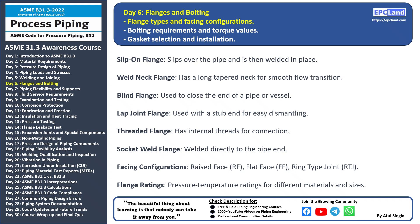Weld neck flange: with a long tapered neck, this flange provides a transition for fluid flow and is ideal for high pressure systems. Blind flange: used to close the end of a pipe or vessel, this flange prevents flow and is commonly used during maintenance. Lap joint flange: paired with a stub end, this flange allows for easy dismantling and is often used in systems requiring frequent maintenance. Threaded flange: with internal threads, this flange can be screwed onto the pipe end and is suitable for low pressure applications.